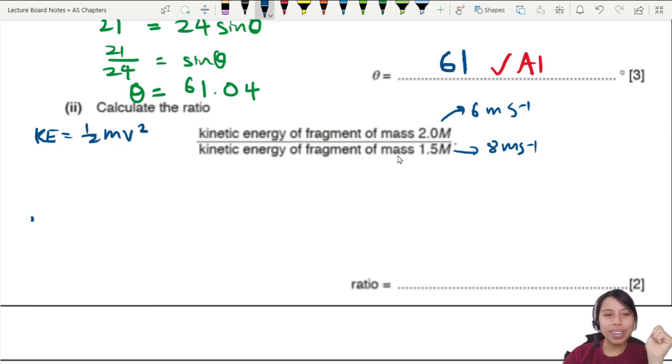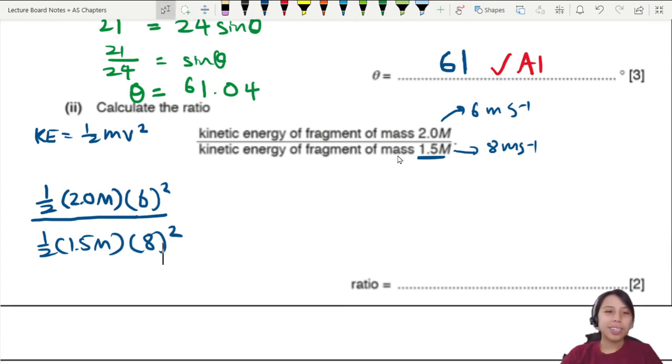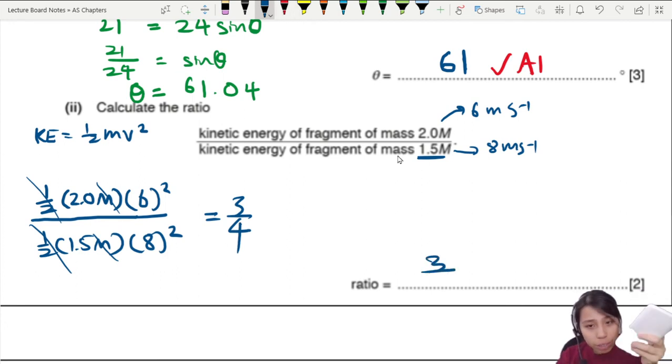So if you want to find the kinetic energy of these two, we need to remember that kinetic energy is half mv squared. So we're going to sub in all the values. So the first one, half 2m, and the v squared will be 6 squared. Divide by the 1.5m one. So this will be half 1.5m times 8 squared. Nice thing is the m and the m cancel out, the half and the half cancel out. So all you left this value supply in your calculator and you should get 3 over 4. But do not write 3 over 4 here. I will give wrong. No fractions allowed. In physics, you need to write the exact value. What is 3 over 4? You write out 0.75.